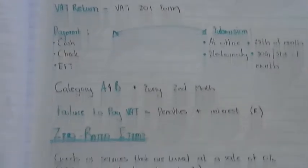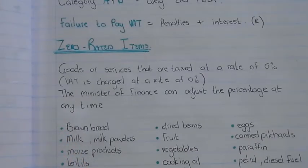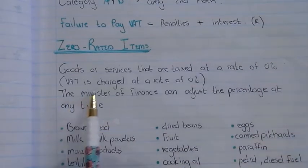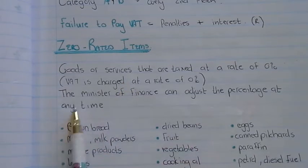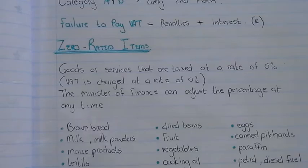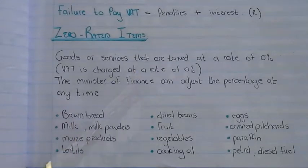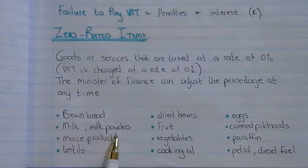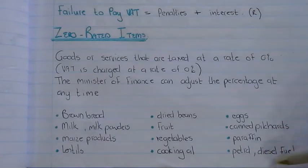Zero-rated items are items essential for somebody to live — goods or services taxed at a rate of 0%. The Minister of Finance can adjust this percentage at any time. Examples of zero-rated items include: brown bread, milk, milk powder, maize products, lentils, dried beans, fruit, vegetables, cooking oil, eggs, canned goods, paraffin, petrol, diesel, and fuel. Note that car oil is not zero-rated — only cooking oil. All fuel types are included.